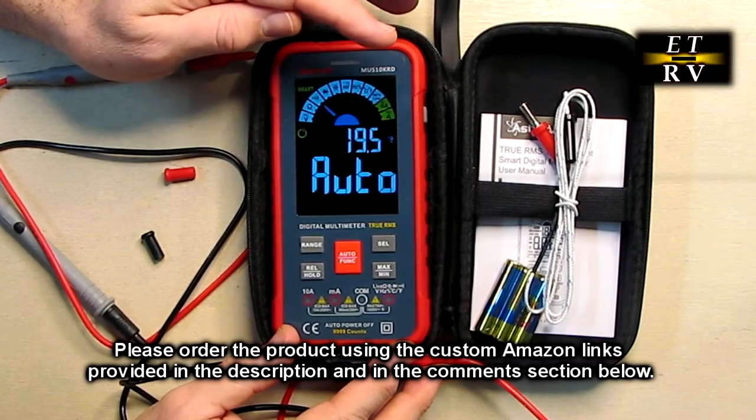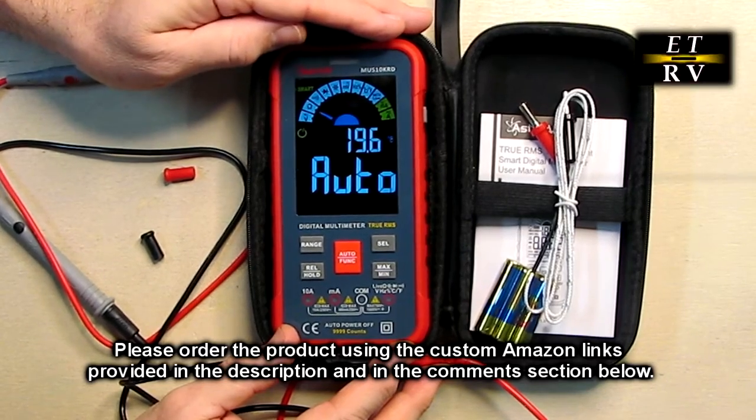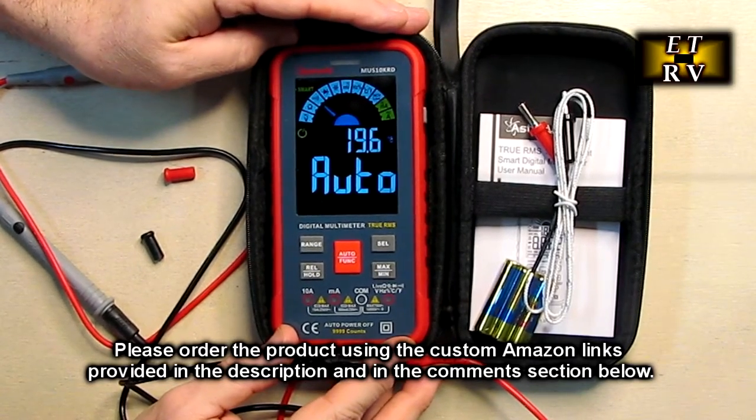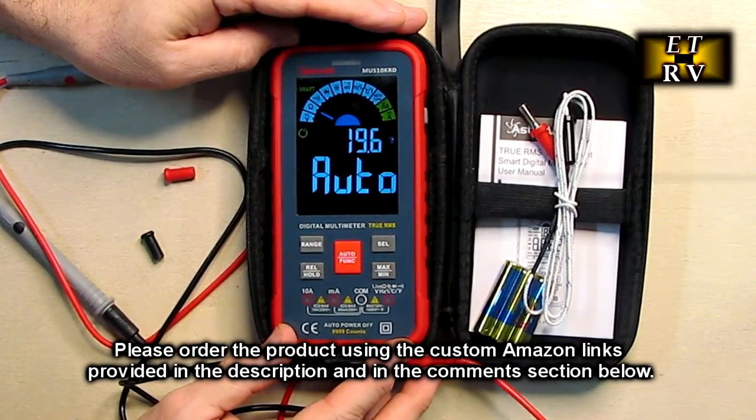Measuring capacitance, measuring voltage AC, DC, continuity, diodes, current, AC current, DC current. And of course, RMS. You can measure RMS voltages on a signal generator or an amplifier.